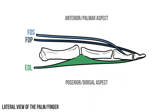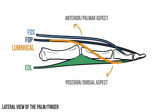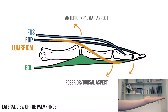The lumbricals are small worm-like muscles that pass between the tendons at the fingers. Anteriorly they attach to the tendon of flexor digitorum profundus, then head distally and posteriorly to attach to the extensor sheath. This odd course allows the lumbricals to have multiple actions in the finger: they run anteriorly to the MCP joint and help to flex it, then pass posteriorly to the interphalangeal joints, pulling them into extension.